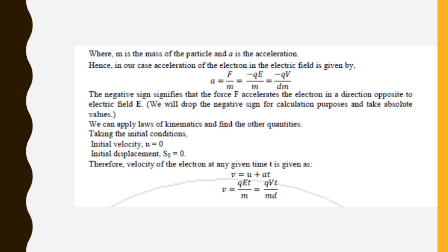We can also apply the laws of kinematics to find other quantities. Initially, if the particle is kept at rest, the initial velocity U = 0 and initial displacement is zero. Using this, the velocity of the electron at any time can be calculated. We know the kinematic equation V = U + AT. We know the value of A and U, and you can put the values to calculate V. Small numerical problems can be done on these.